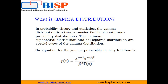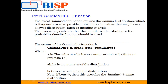The gamma distribution has a probability density function given by this formula. Excel provides us a function GAMMA.DIST to calculate gamma distribution, and we can use this function to study variables that may have a skewed distribution. The gamma distribution is commonly used in queuing analysis.